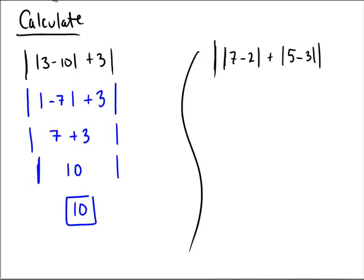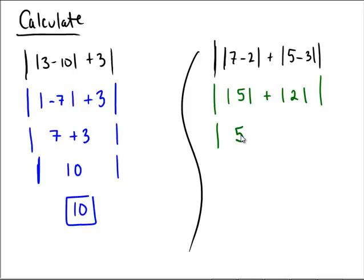Let's try the problem on the right — the absolute value of the sum of two smaller absolute values. Inside the big absolute value we have the absolute value of seven minus two, which is five, and the absolute value of five minus three, which is two. The absolute value of five is five and the absolute value of two is two. So we take five plus two and have an absolute value of seven, and the magnitude of seven is just seven.